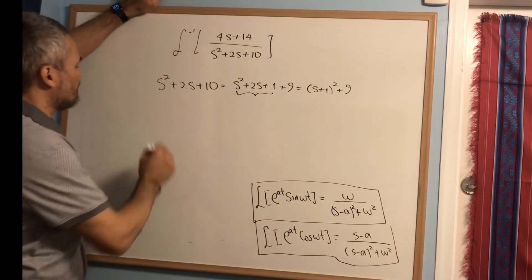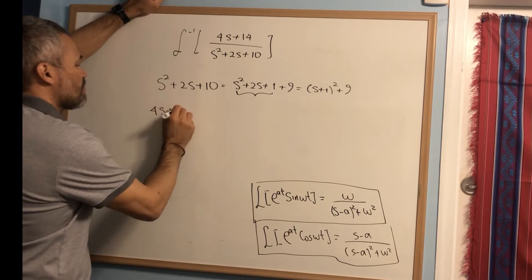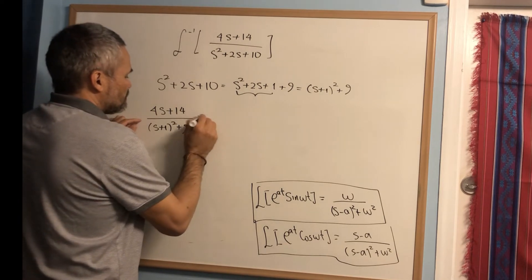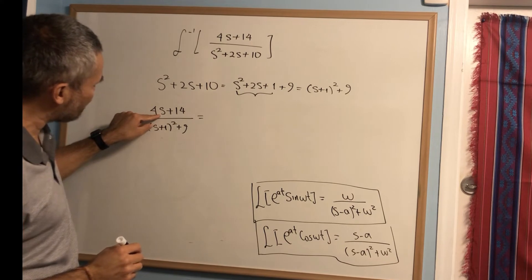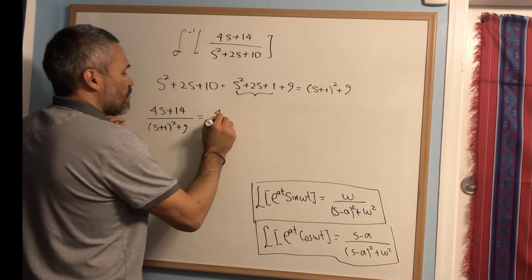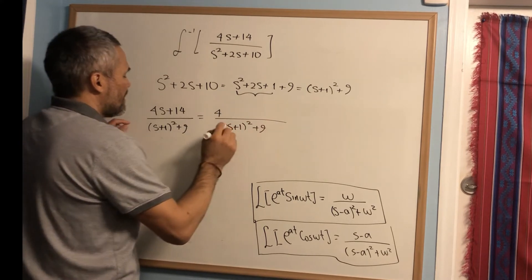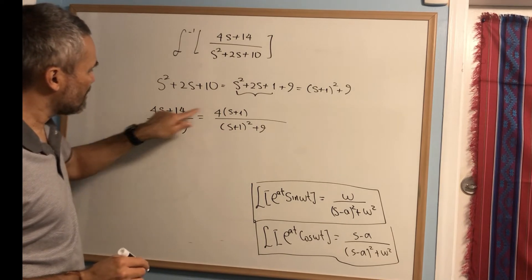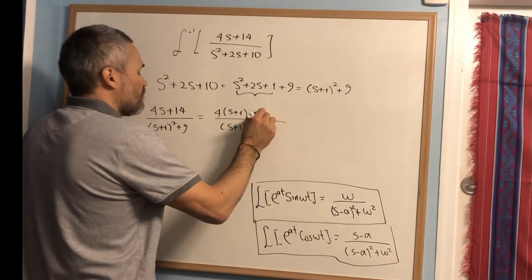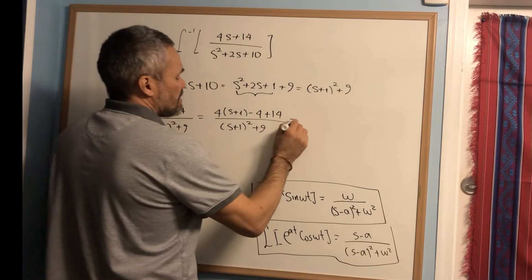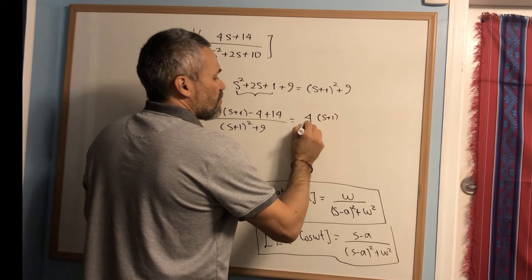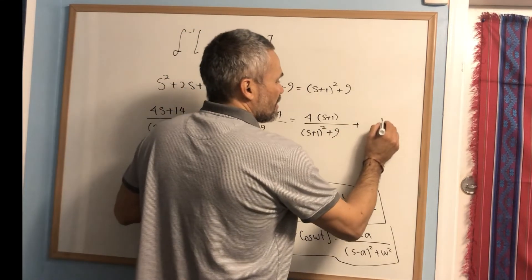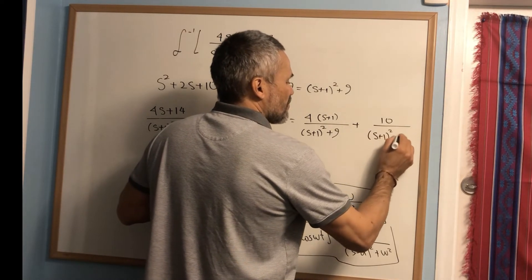With the completed square, we write the expression as (4s+14) over (s+1)²+9. We want s+1 in the numerator instead of just s, so we write 4s = 4(s+1) − 4. Then 4(s+1) over (s+1)²+9 plus (−4+14) = 10 over (s+1)²+9. This gives 4(s+1)/((s+1)²+9) plus 10/((s+1)²+9).